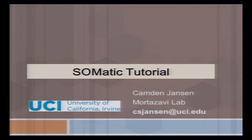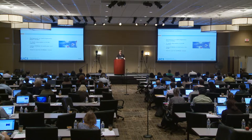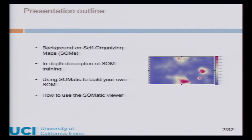My name's Camden, and I'm from UCI in Dr. Morozov's lab. Today I want to talk about my software, Somatic, which is used for making self-organizing maps — a way to visualize highly dimensional data sets. Today I'm going to cover some background on what a self-organizing map is, why you'd use one, an in-depth description of how you train one, how to use the software to build your own, and then a tutorial on how to use the self-organizing map viewer, which lets you supply a website to anybody that wants to look at your data.